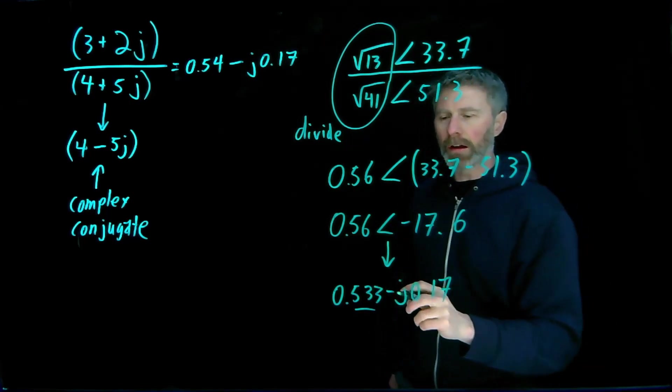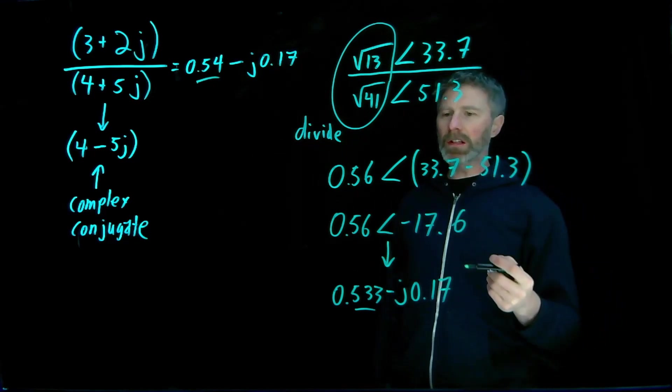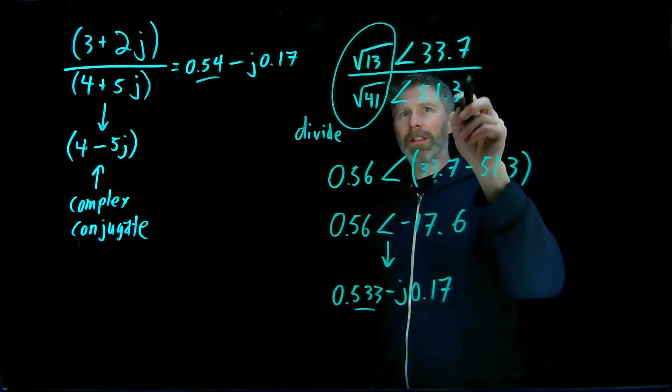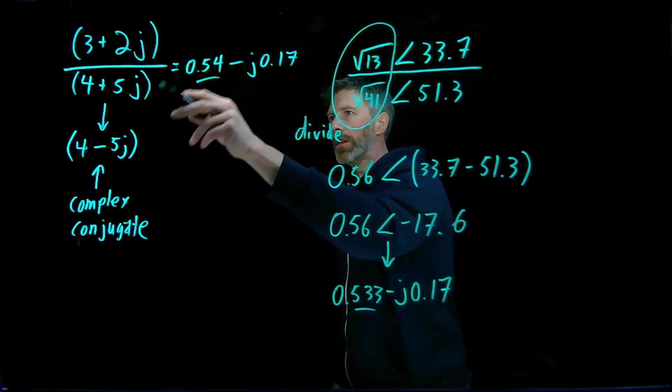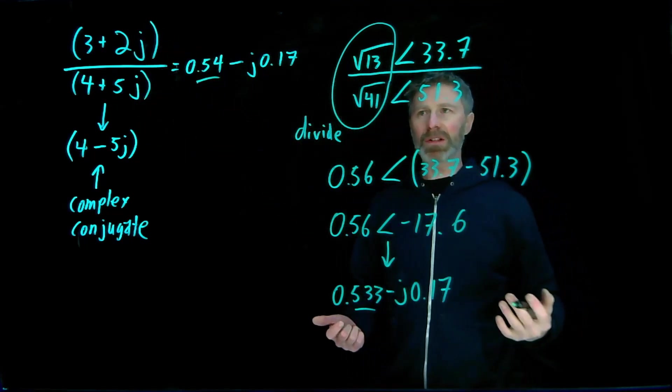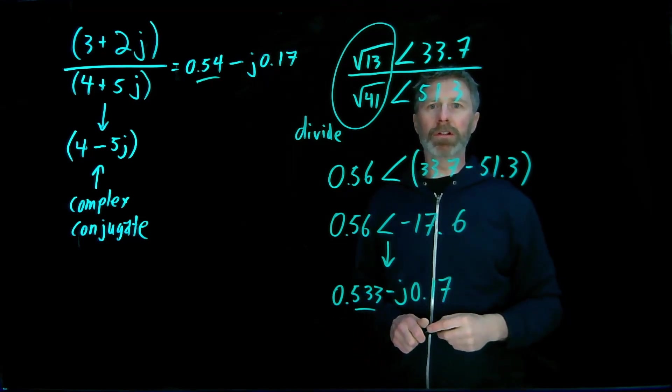So a little bit of rounding error that occurred here that didn't quite get 0.54. But you can see that I've confirmed that the polar notation division is equal to the division when I do it in rectangular coordinates as you would expect. It's just that when you are in polar coordinates, much easier to do the division.